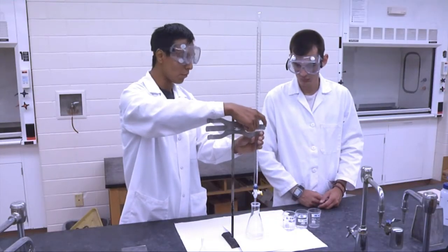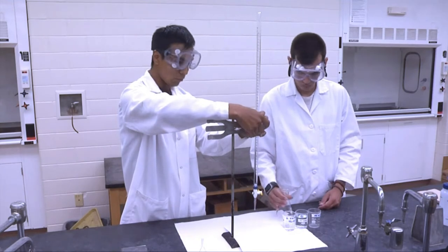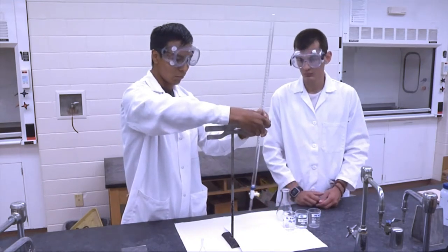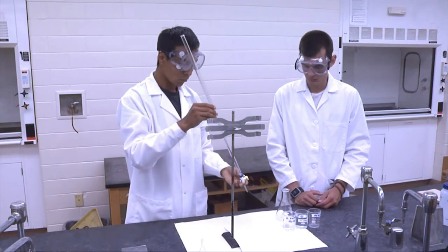In use, a burette is mounted to a ring stand with clamps. Before use, a burette should be rinsed well with deionized water, then rinsed once with the solution to be used with the burette.